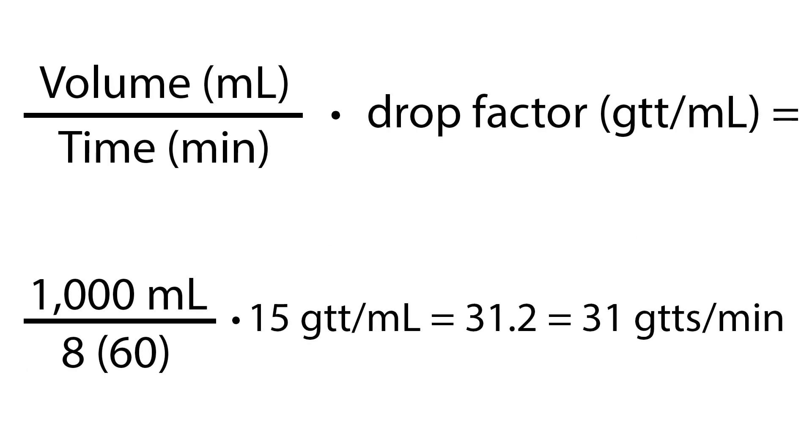Let's try an example. The provider has ordered 1000 mL lactated ringers to infuse over 8 hours. You have a macro drip tubing with a drop factor of 15 drops per mL. Calculate how many drops per minute to set the IV flow rate. Using the formula, 1000 mL divided by 8 times 60, since we have 8 hours times 60 minutes per hour, then multiply by 15 drops per minute to equal 31.2, rounded to 31 drops per minute.